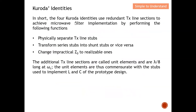In short, the four Kuroda identities use redundant transmission line stubs to achieve microwave filter implementation by performing three functions. First, Kuroda's identity physically separates transmission line stubs. Second, it is used to transform series stubs into shunt stubs, or vice versa — most of the time we transform series into shunt. Third, we are also able to change a impractical Z0 to a realizable one using Kuroda's identity. These are the three main functions of Kuroda's identity.